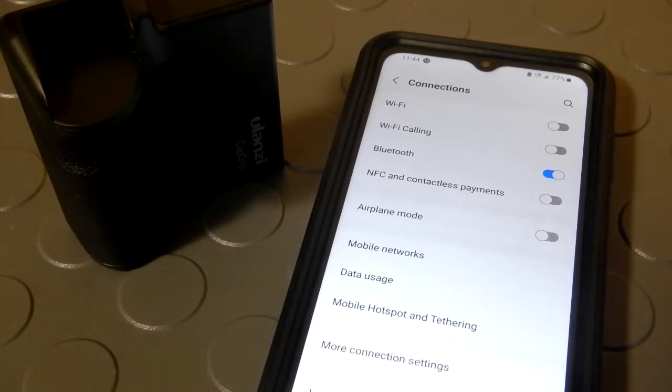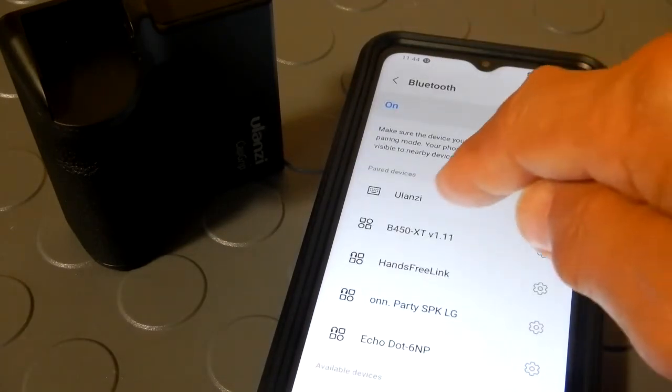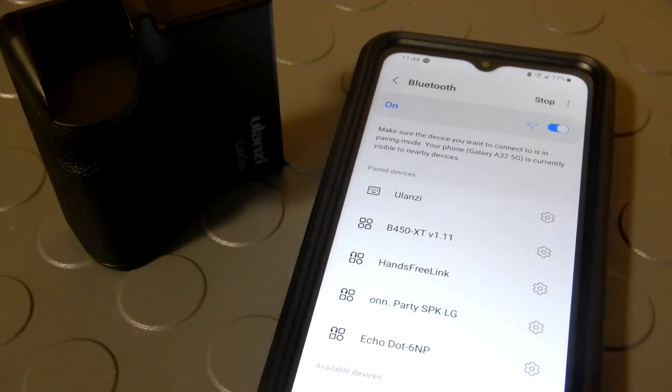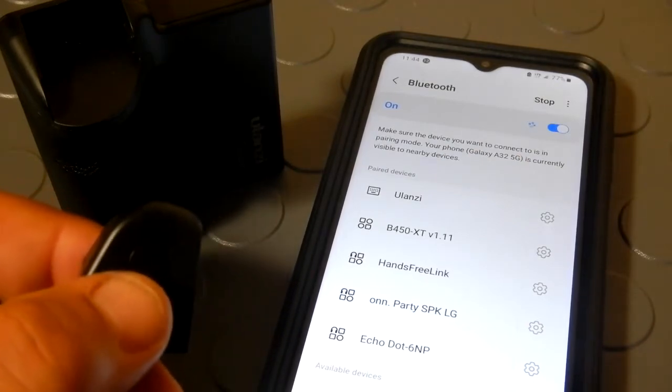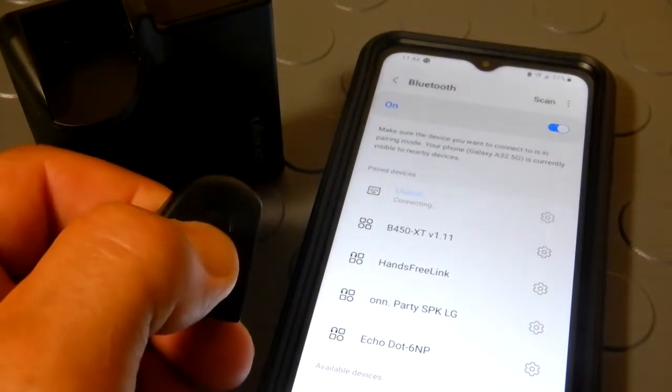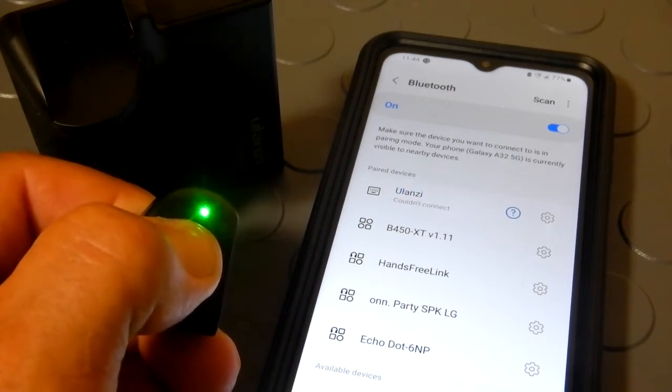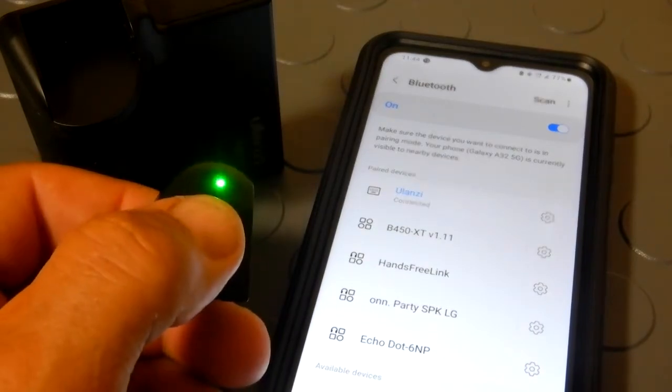Let me go to my Bluetooth. You'll see that Ulanzi is in it because I've had it on. Then what I'll do is I'll go on to Ulanzi and then I'll push this button down and it says connected. That simple.